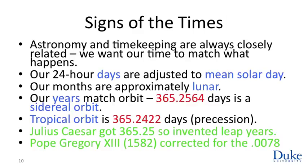We want our time to match what's going on — we want 6 a.m. on our clock to be solar sunrise, because that's the time we go out and plant things and work in our fields. So our 24-hour days are adjusted to be the mean solar day. Our months, the 12 months into which we traditionally divide the year, are approximately lunar.